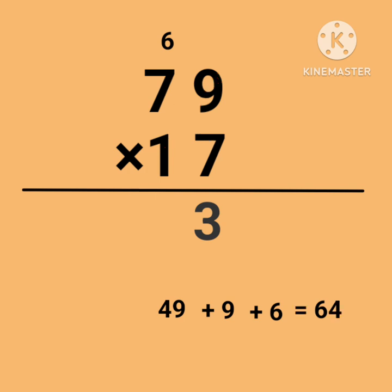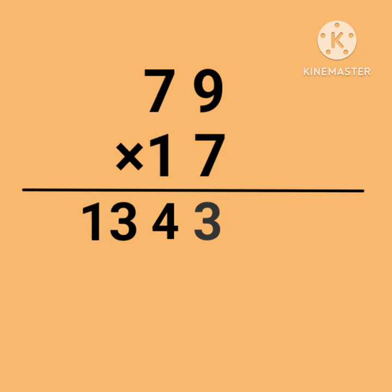64. Write 64's 4, carry 6. Lastly, 7 × 1 = 7. Adding carry 6, we get 13. So the answer is 1,343.